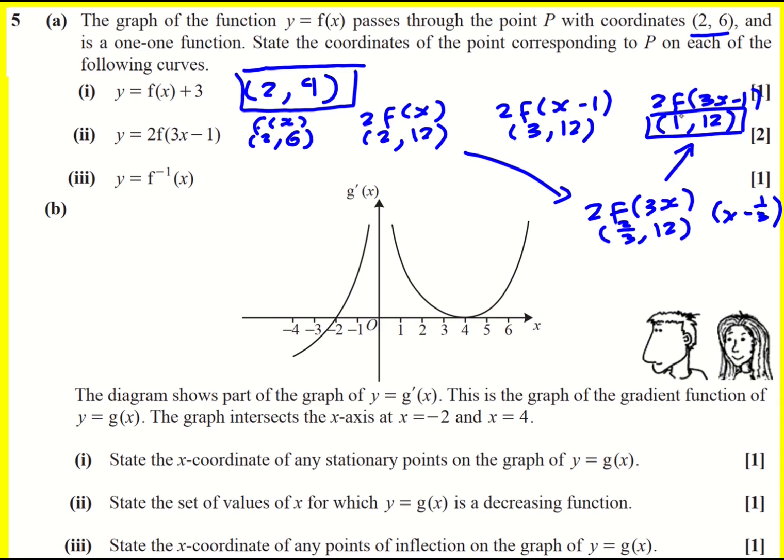In each case, we do get to this (1, 12). And we do get to this 2f of 3x minus one function. Sorry, I talked about that for quite a long time, but it's quite a subtle aspect of this topic, probably the most subtle aspect.